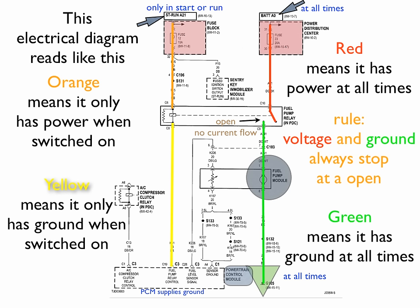If you notice on the right, the red is power at all times. It is not switched on. And the green is ground at all times. It is not switched on. But if something has to be switched on the power side, we color it orange. Or if it has to be switched on on the ground side, we always color it yellow.